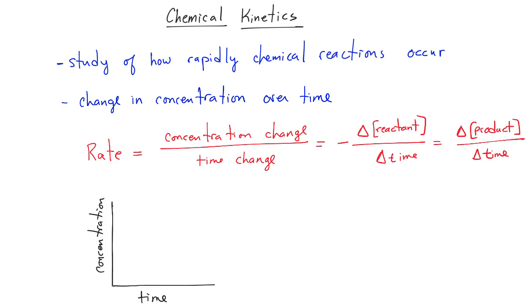Graphically, we're going to be looking at a negative change in reactant concentration. On a graph, that line is going to decrease in slope like this because the concentration of the reactant is getting less over time. But for the products, the concentration is increasing over time, so it has a positive slope.